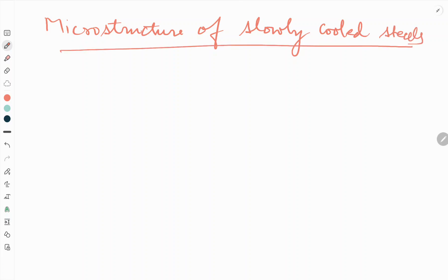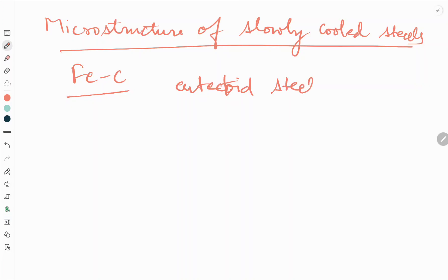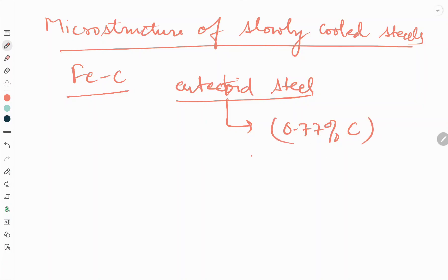So now, what are the microstructures of slowly cooled steels? First, in the iron-carbon diagram we can see — let's take the first example. We will talk about eutectoid steels. The microstructure of eutectoid steel, which contains 0.77 percent carbon, is all pearlite.